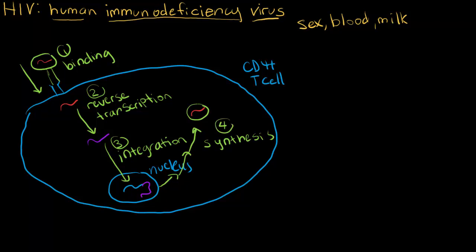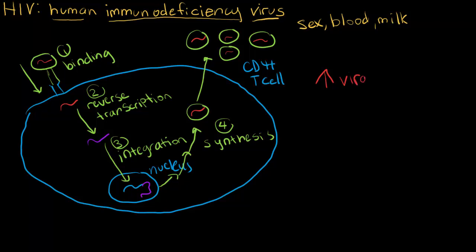Eventually these HIV particles make their way outside of the cell, and one cell can produce lots and lots of HIV particles. In the process, the cell will eventually die due to the virus interfering with the system. Those HIV particles go on to find another CD4 cell to infect, and that cell will also die. Over time, the number of HIV particles goes up — the viral load increases — while the number of CD4 cells goes down, meaning the CD4 count decreases.